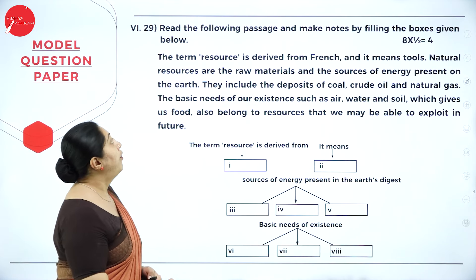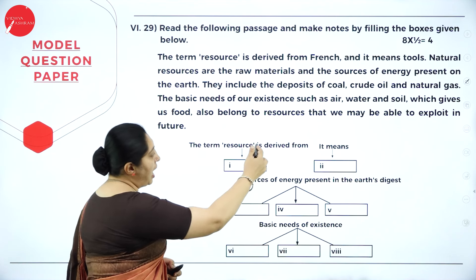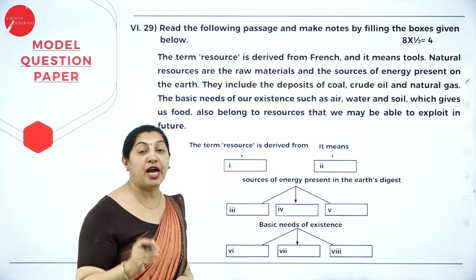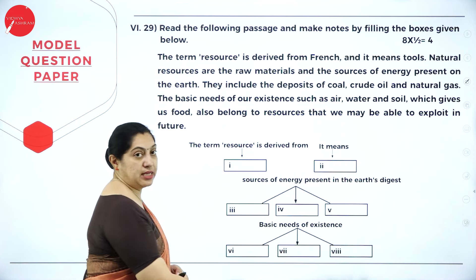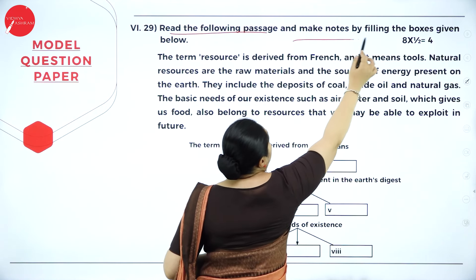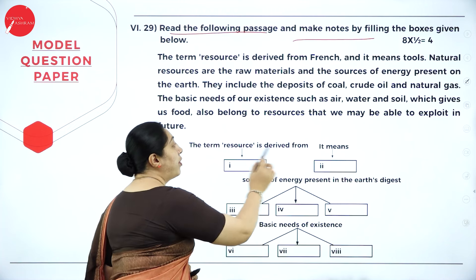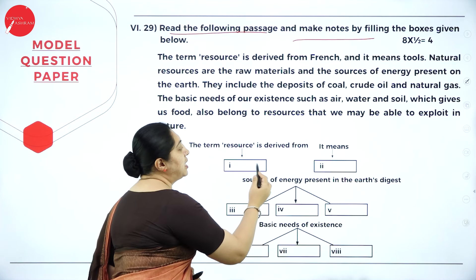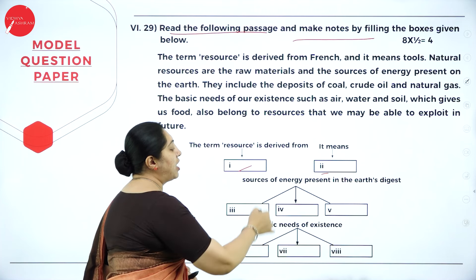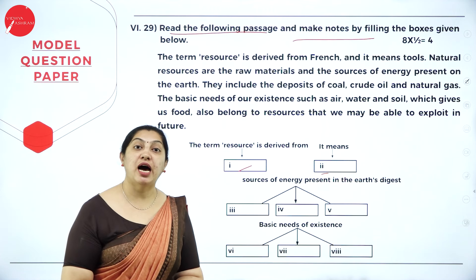Question number 29: read the following passage and make notes by filling the boxes given below. You can see the passage and below it the boxes. There are eight boxes, each carrying half a mark, so together it's four marks. You must draw this table in your answer script — it is mandatory. Read the heading and main heading, then the numbered points, and fill in the boxes accordingly based on the paragraph.